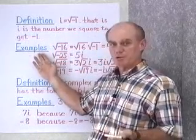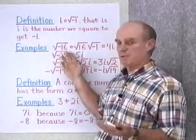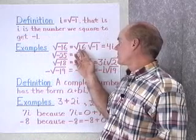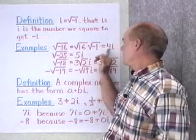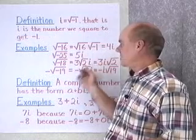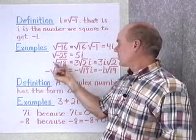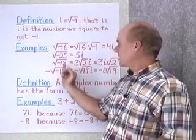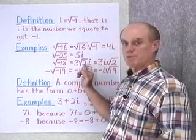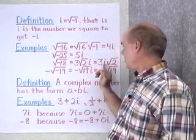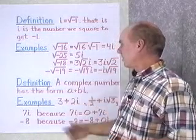Here are some examples of how we would use the square root of negative 1. Square root of negative 16 — you can write it as square root of 16 times square root of negative 1. The positive square root of 16 is 4, and by definition, square root of negative 1 is i. Square root of negative 25 would be 5i. Square root of negative 18 — since 18 is 9 times 3, I get 3 times square root of 2 times i. I write the i in front of the radical so I don't confuse it with being under the radical.